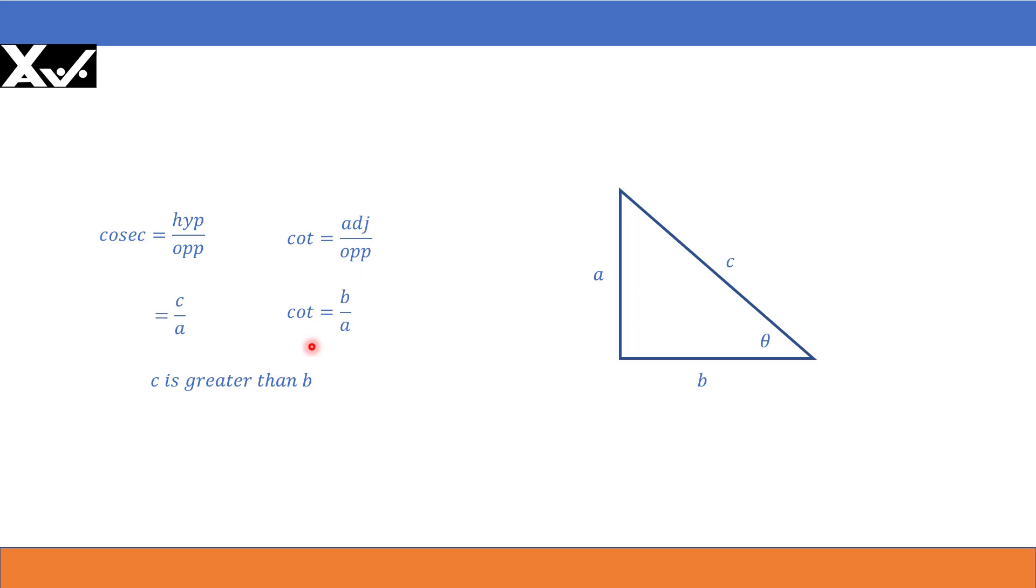C is greater than B and therefore, cosecant is greater than cot. I hope this convinces you to know that cosecant is always greater than cot for all values of theta.